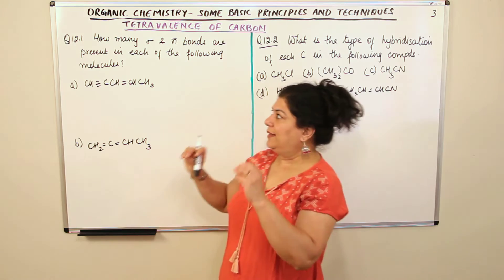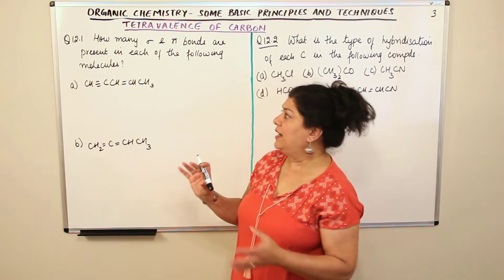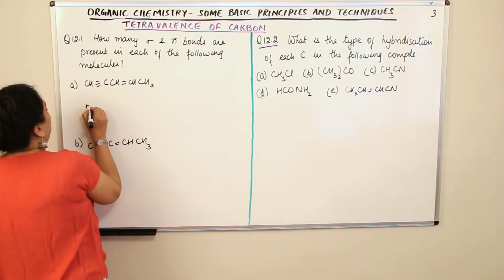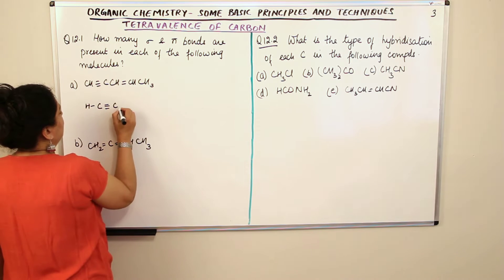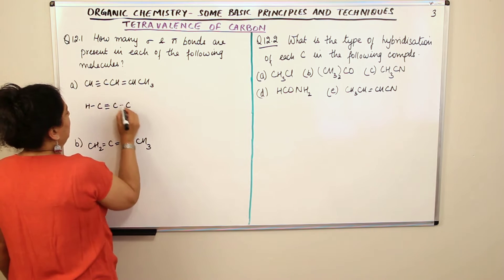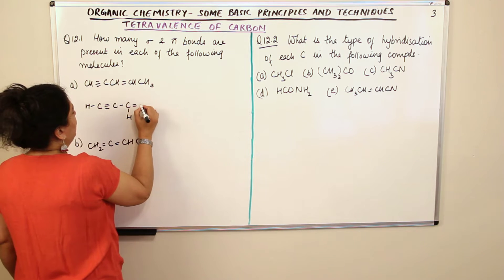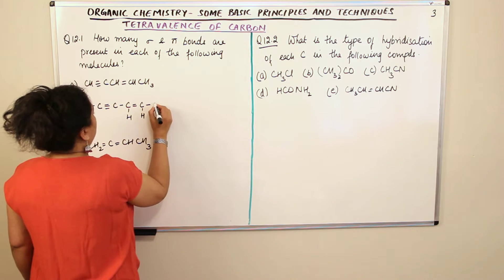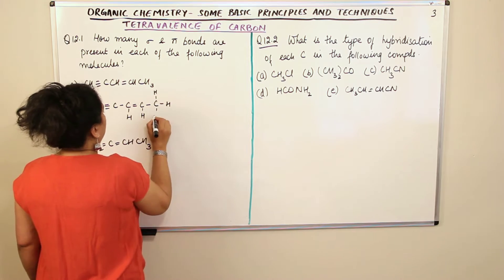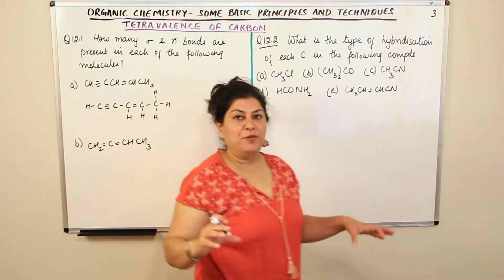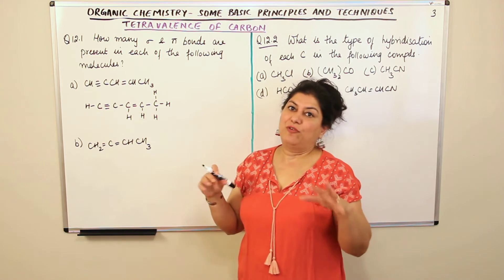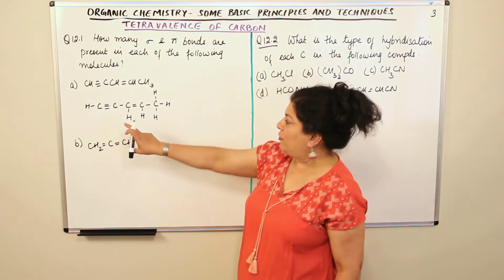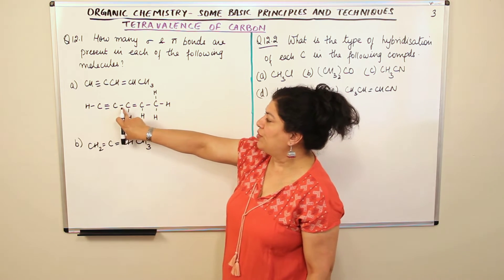In order to count the total number of bonds, it would help to make an expanded structure and then count. So for the first molecule, you have H-C≡C-C=C-C with the appropriate hydrogens. Every carbon should be forming four bonds — for example, three bonds on one side and one bond on the other side gives four. When you have made sure every carbon forms four bonds, your structure is correct.